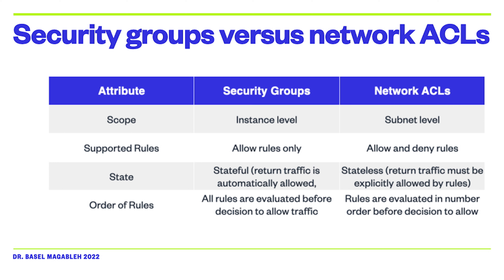Here is a summary of the differences between security groups and network access lists. Security groups act at the instance level, but network access lists act at the subnet level. Security groups support allow rules only — you cannot deny specific traffic — but network access lists support both allow and deny rules. Security groups are stateful: if you open port 80 inbound, port 80 outbound is also open by default. Network access lists are stateless, which means if you want to allow port 80 inbound, you must also add a separate rule to allow port 80 outbound.